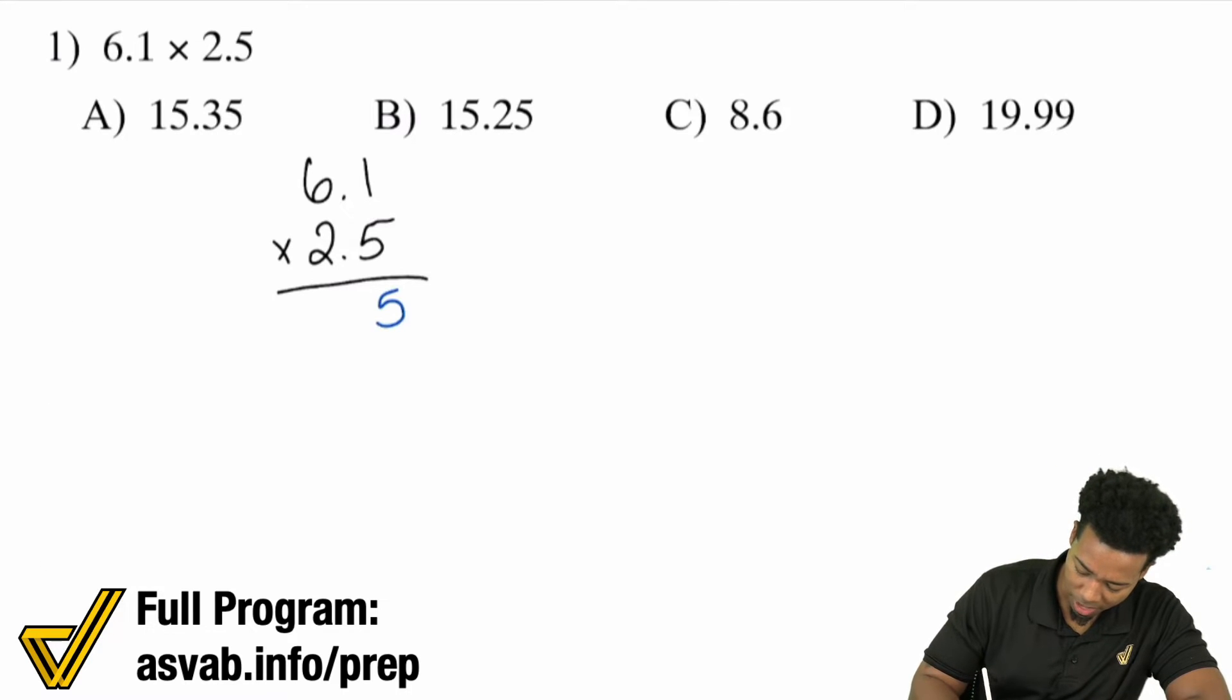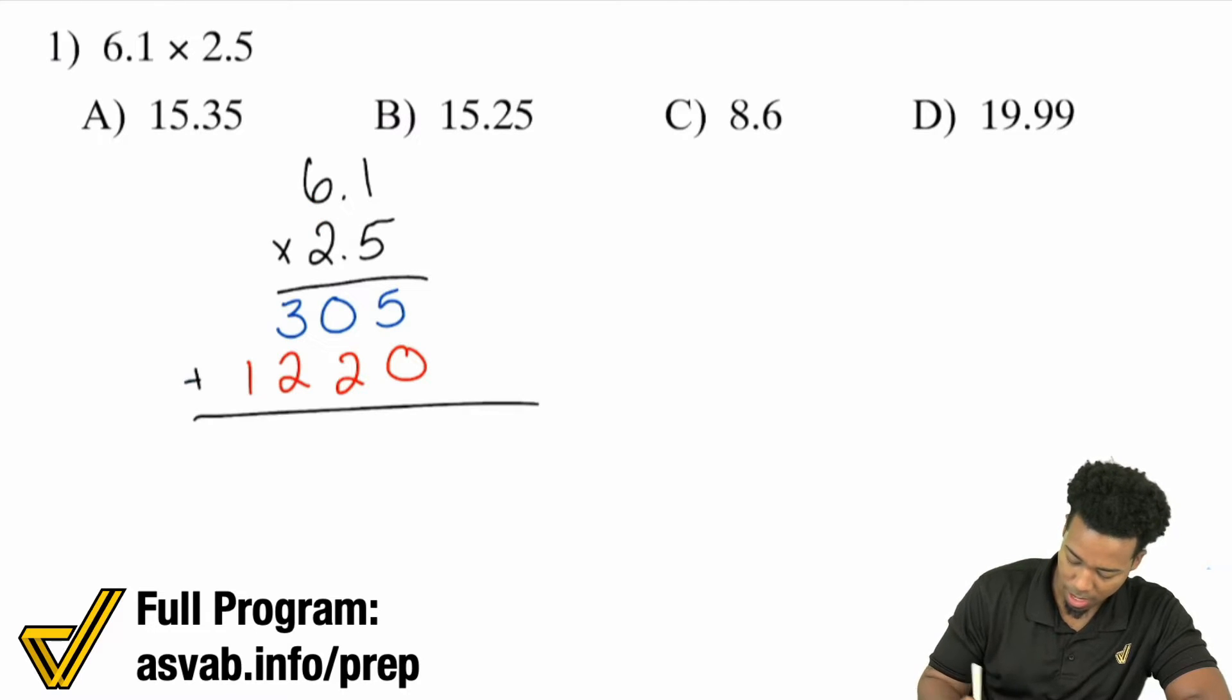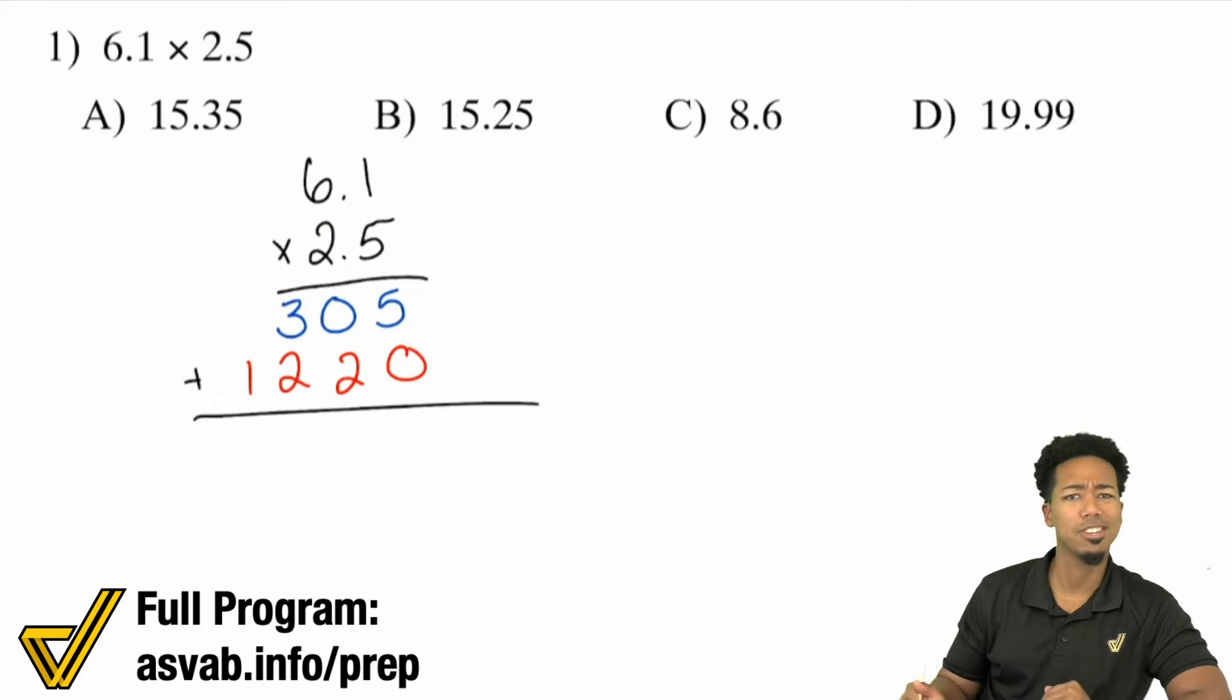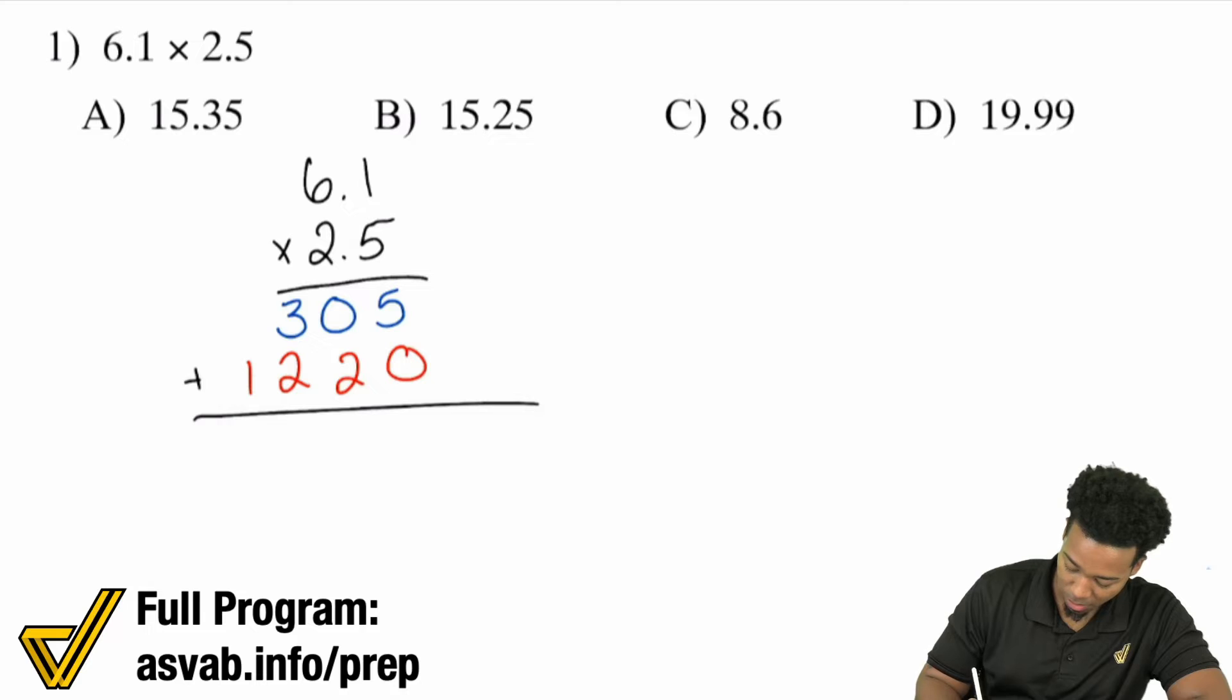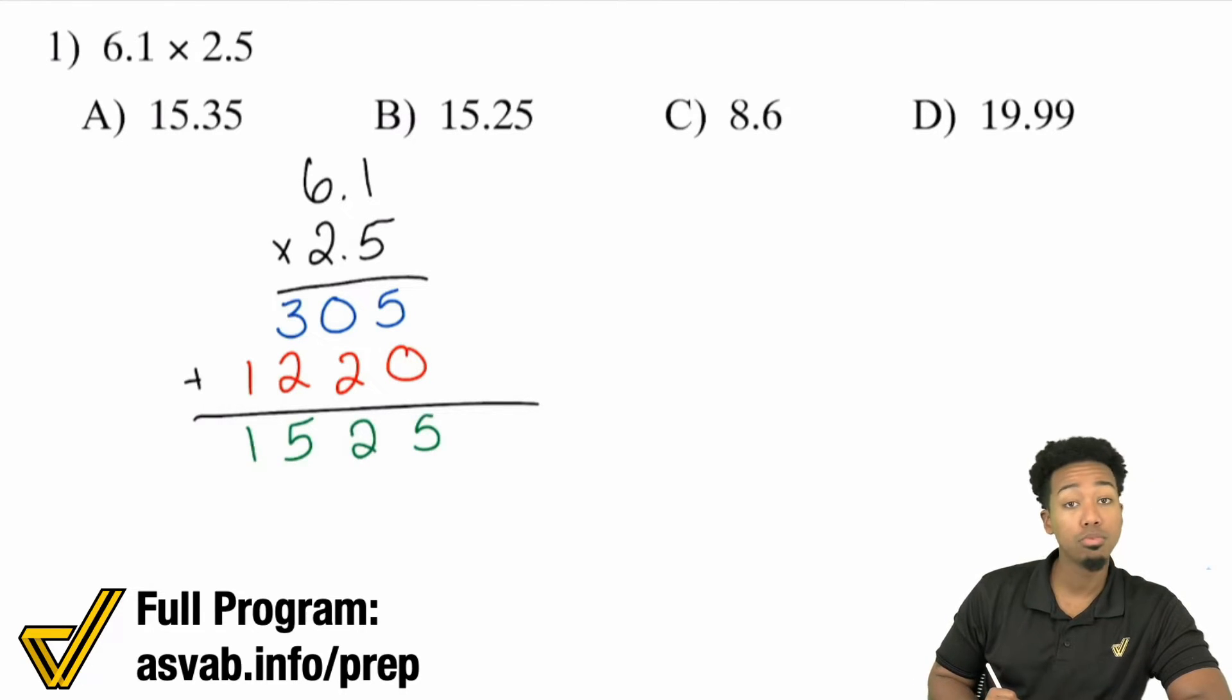1 times 5 is 5, 6 times 5 is 30. Then we'll do 1 times 2, that's 2. 6 times 2 is 12. So again, just multiply as if those decimals aren't even there. It's that straightforward. And so from here, 5 plus 0 is 5, 2, 5, and 1. All set, 1525.